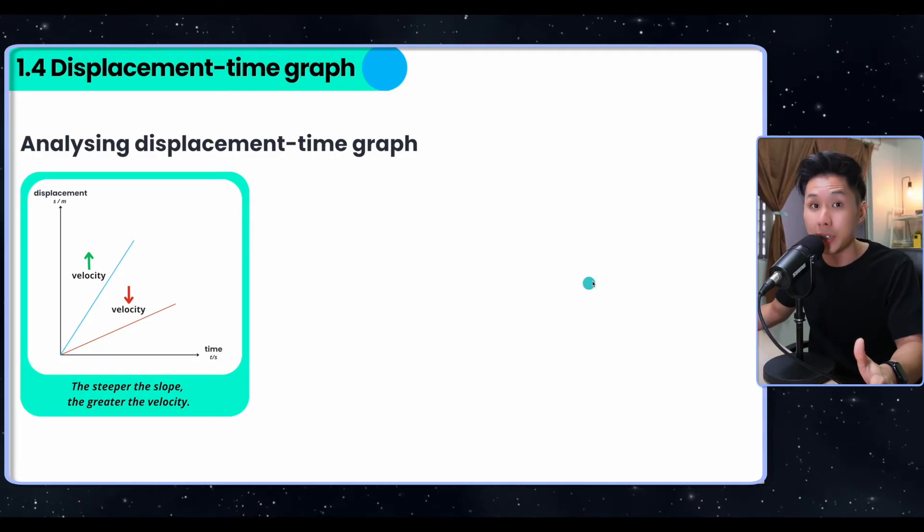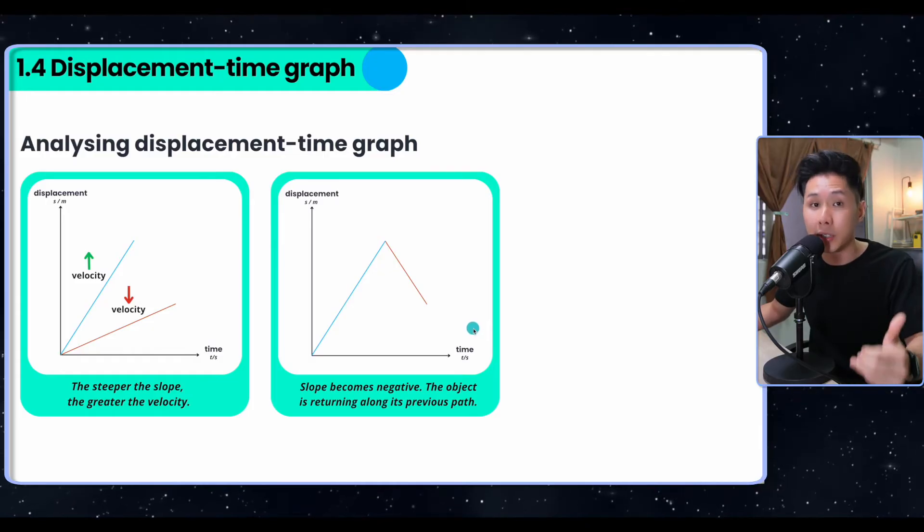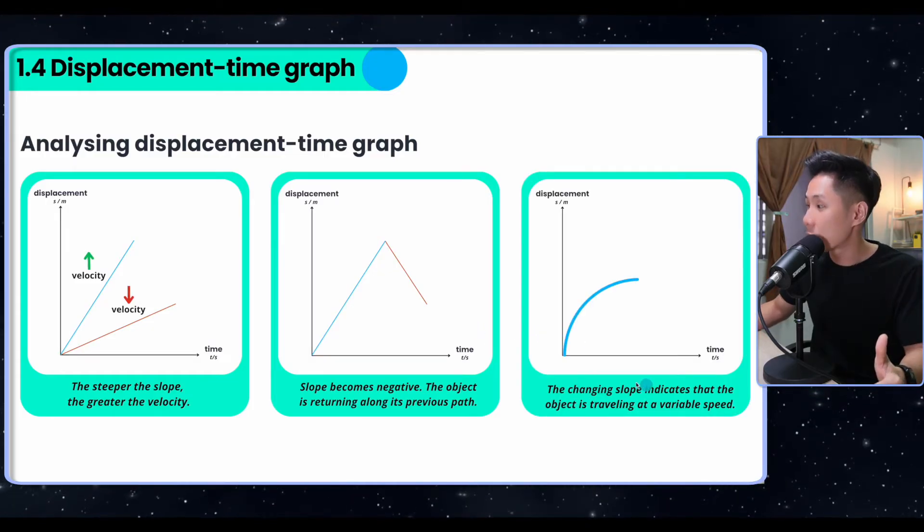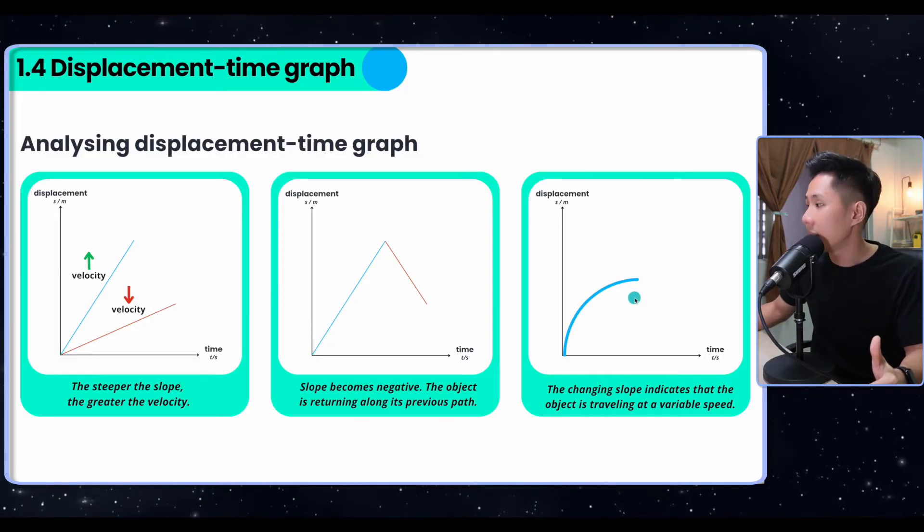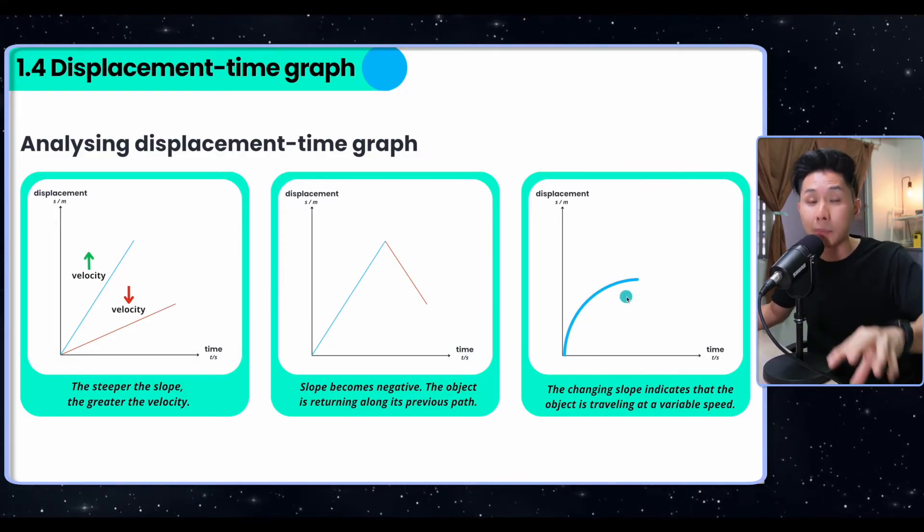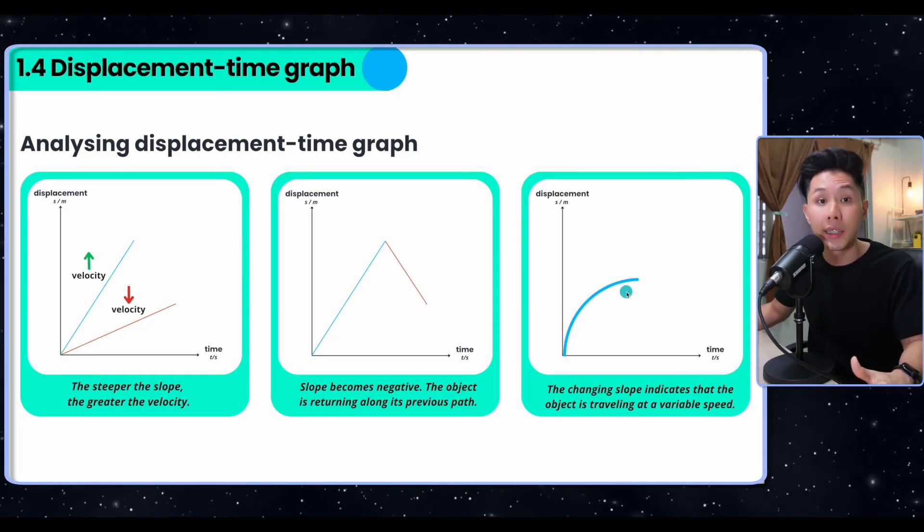To summarize: the steeper the slope, the greater the velocity. When the slope becomes negative, it means that the object is returning to the original. This changing slope here, as compared to a slope that is constant, means that the object is changing speed throughout the journey. That's why the gradient across the graph here is different.